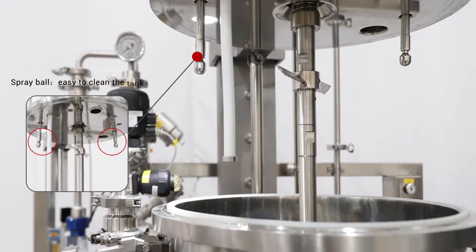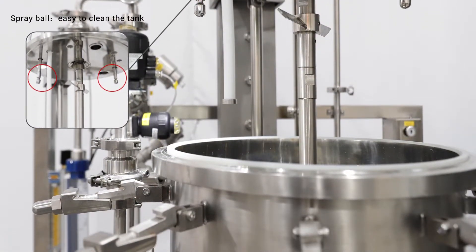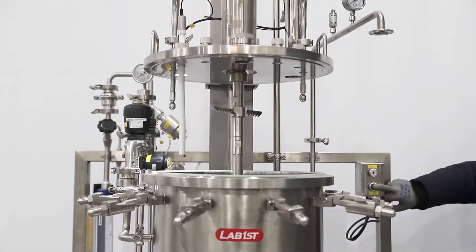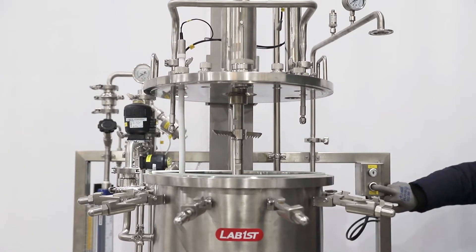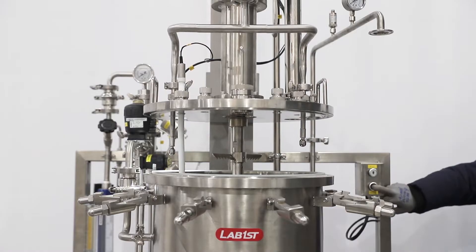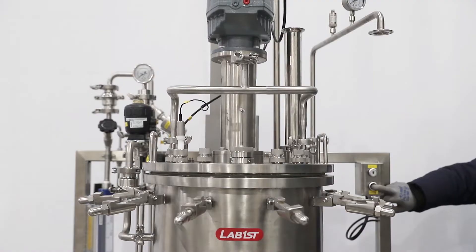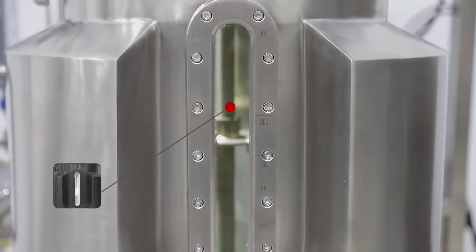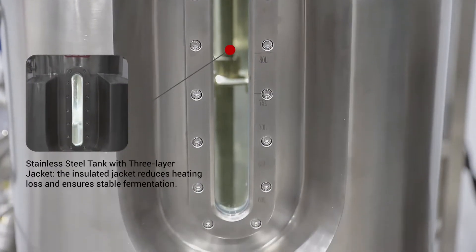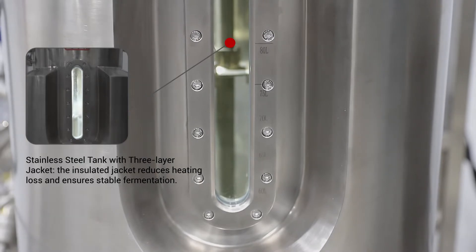Spray ball, easy to clean the tank. The vessel lid can be lifted or lowered by pressing the button to save your energy and time. Stainless steel tank with three-layer jacket. The insulated jacket reduces heating loss and ensures stable fermentation.